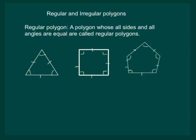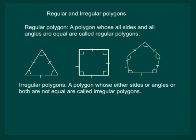Let us now define irregular polygons. A polygon whose either sides or angles or both are not equal are called irregular polygons. For example, consider a rectangle. Although all its angles are equal, but all the sides are not equal. Only opposite sides are equal.